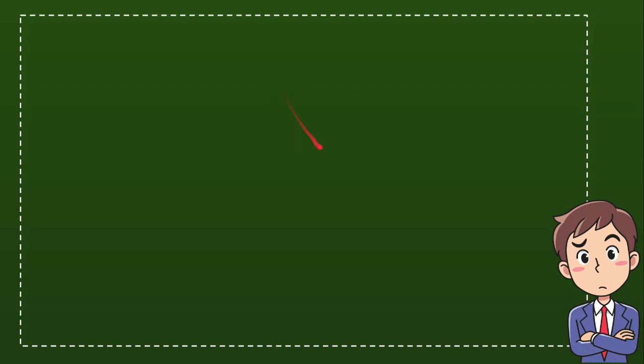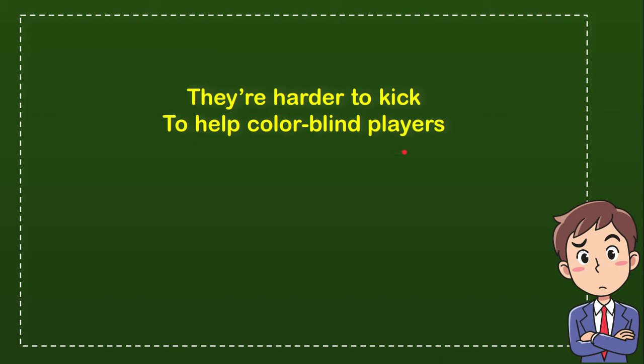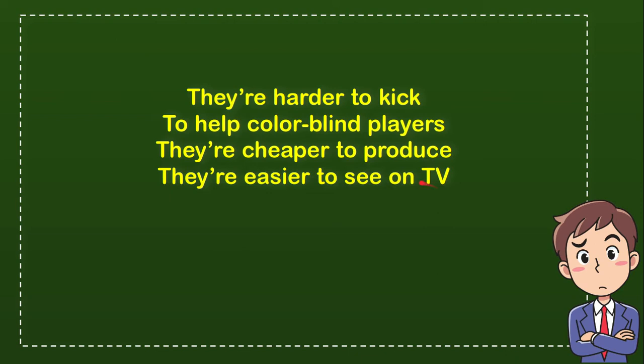The first option is: they are harder to keep. The second option is: to help colorblind players. The third option is: they are cheaper to produce. And the last option is: they are easier to see on TV. From these four options, which one do you think is the answer?